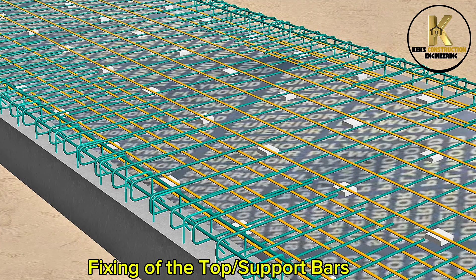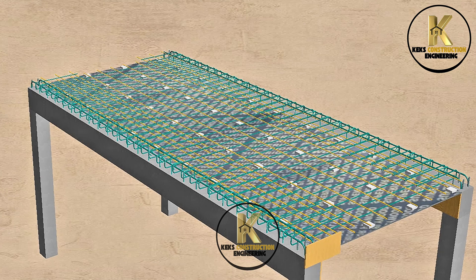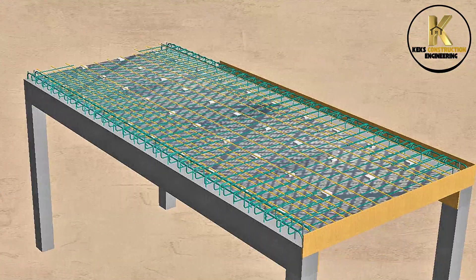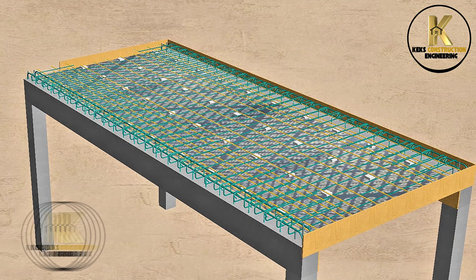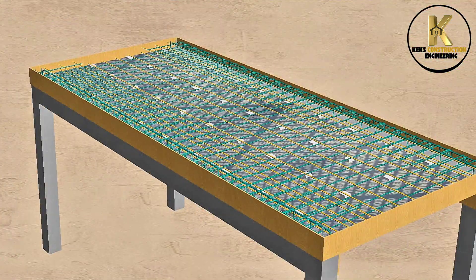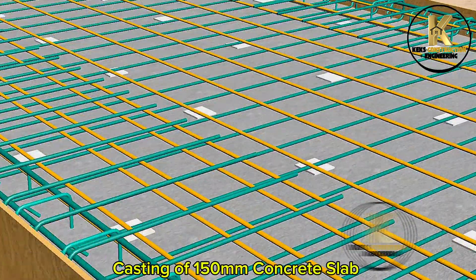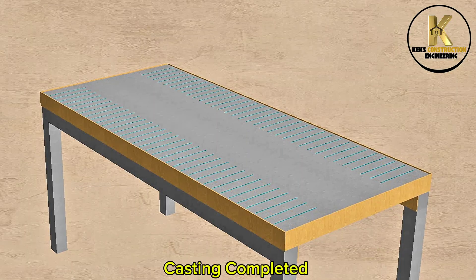Fixing of the top support bars. Fixing of slab formwork. Inspection of reinforcement and formwork before casting. Casting of the 150 mm concrete slab. Casting completed.